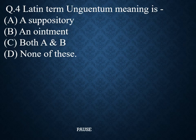Question 4. Latin term 'Unguentum' meaning is. Option A: Suppository. Option B: An ointment. Option C: Both A and B. Option D: None of these. And the right answer is: An ointment.